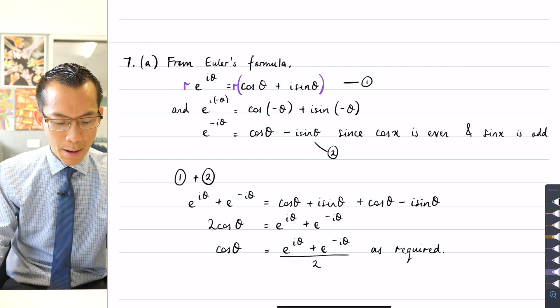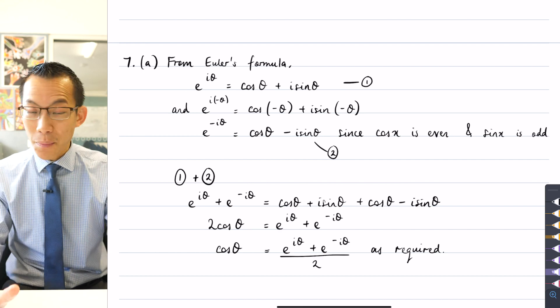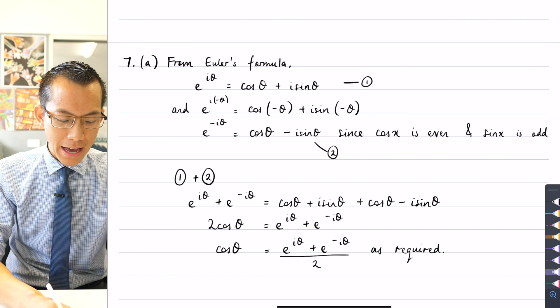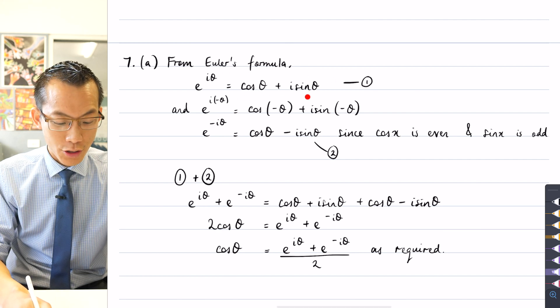However, Euler's formula is stated just with a complex number that has a modulus of 1, so that's what Euler's formula looks like, as stated traditionally.